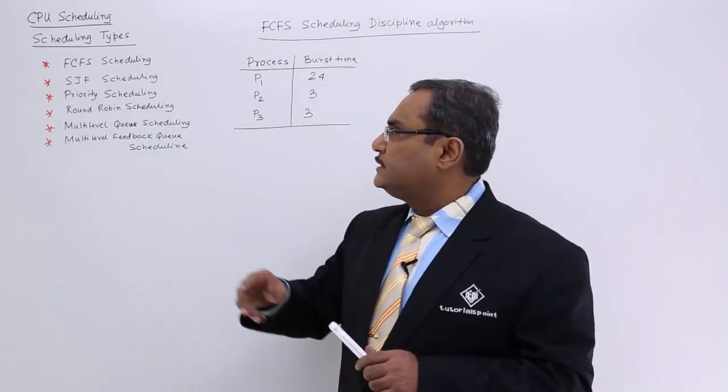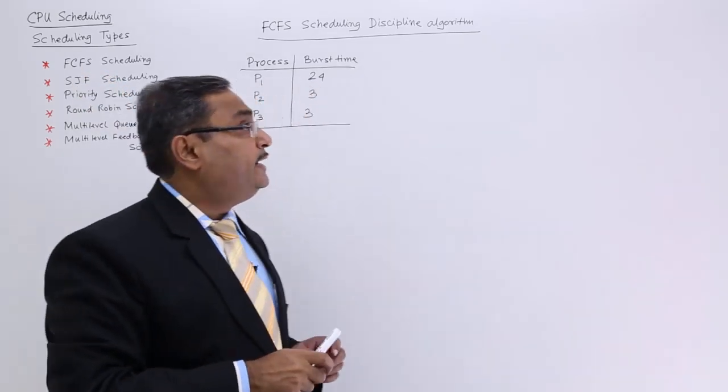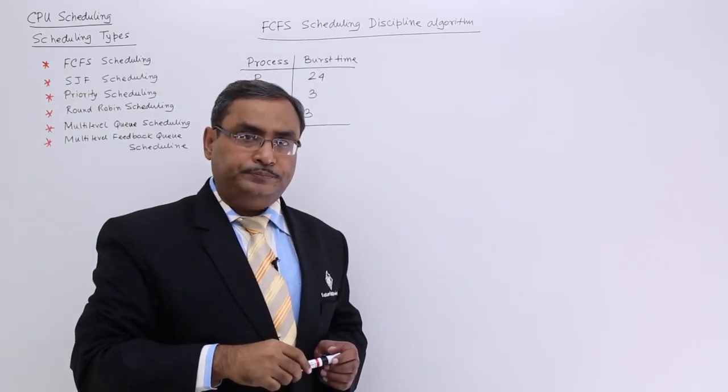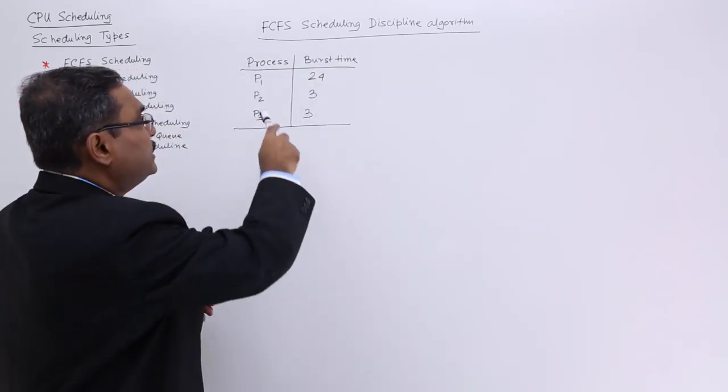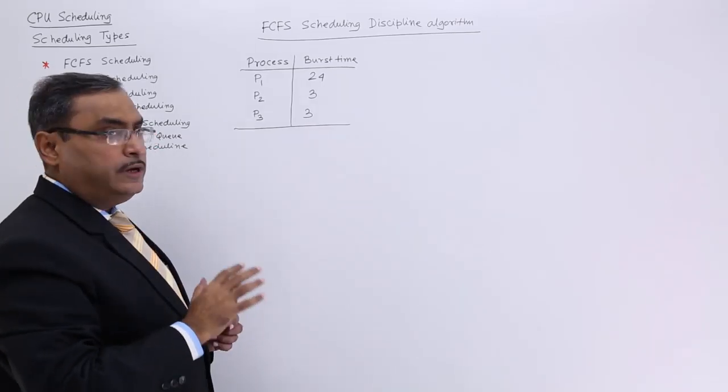Here I am going to discuss the FCFS scheduling discipline algorithm. Let's suppose this problem has been given: we have processes P1, P2, and P3.